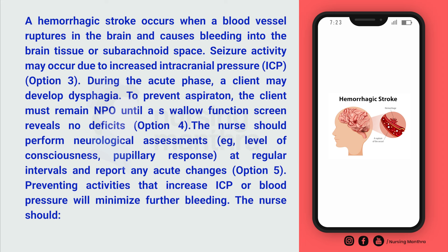During the acute phase, a client may develop dysphagia. To prevent aspiration, the client must remain NPO — that is Option 4 — until a swallow function screen reveals no deficit. The nurse should also perform neurological assessments — Option 5 — including level of consciousness and pupillary response at regular intervals, and report any acute changes.